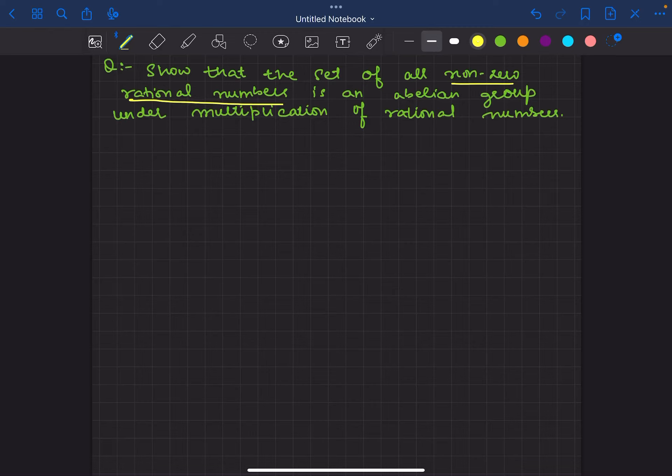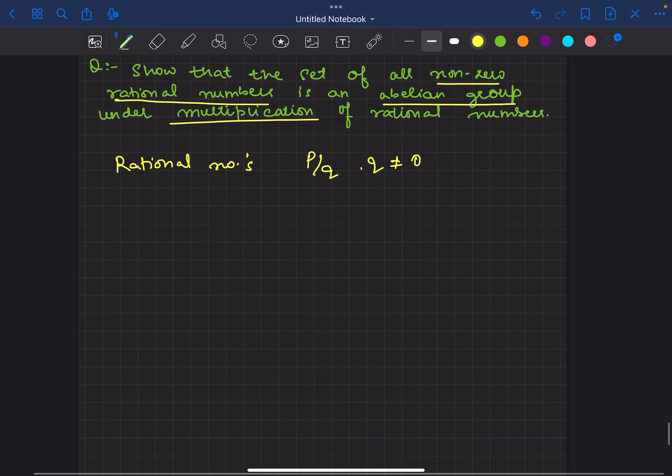Rational numbers - we need to tell that it is an Abelian group and this is the operation multiplication. So, rational numbers are the same as P by Q, and Q is not 0 because obviously it is not defined. So these are the rational numbers.